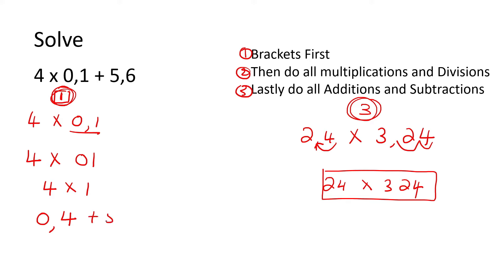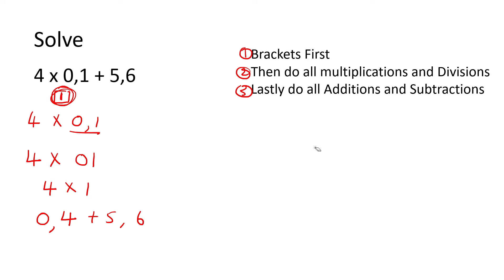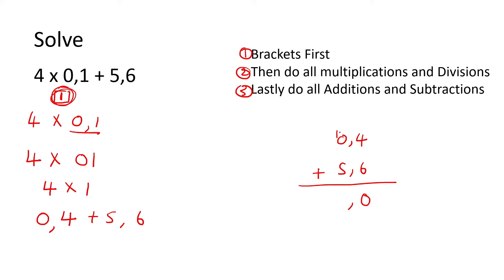Then we say plus five comma six. We've learned in previous videos how to add or subtract decimals — you put the decimals on top of each other. So zero comma four plus five comma six. Four plus six is ten, so put a zero and carry one. One plus five is six. So the answer is six comma zero, but when you have zeros at the end of decimals, you can leave them out. So the answer is just six.